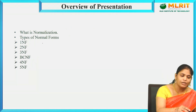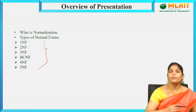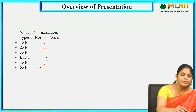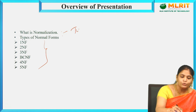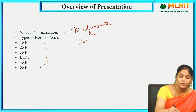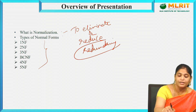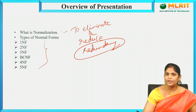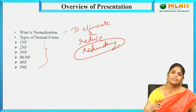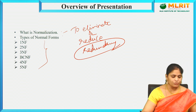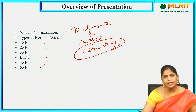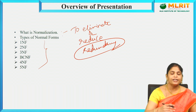Before going to deal with all these normal forms, what is the purpose of normalization in DBMS? The main purpose is to eliminate or reduce redundancy. What is meant by redundancy? Redundancy is nothing but duplication of data — maintaining the same data in two or more tables or relations. That is the purpose of normalization: to eliminate or reduce the redundancy of data.